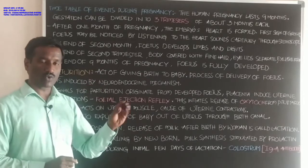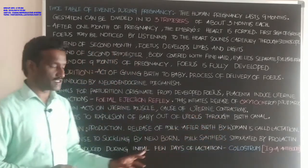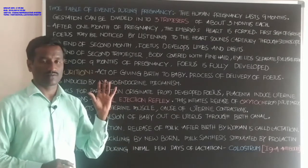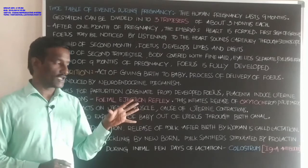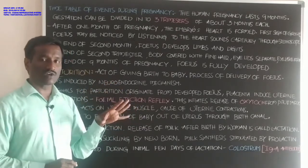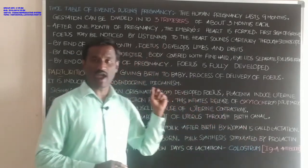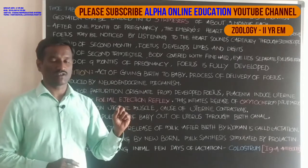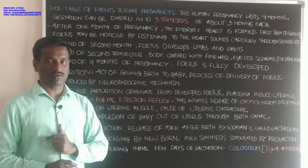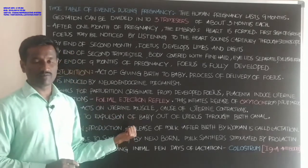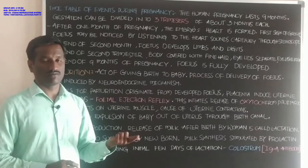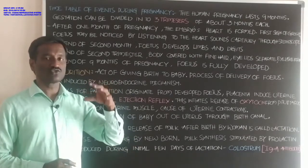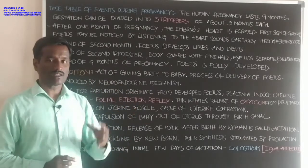Colostrum is the milk produced during the initial days of lactation by the mother. It consists of IgA type antibodies, which give protection from various types of infections. Lactation, or breastfeeding, is also recommended by doctors, as it is used to raise a healthy, growing baby.